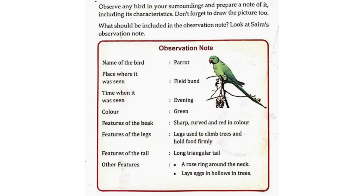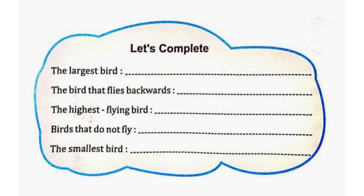An example is given below — look at Saira's observation note. Name of the bird: Parrot. Place where it was seen: Field bund. Time when it was seen: Evening. Colour: Green. Features of the beak: Sharp, curved and red in colour. Features of the legs: Used to climb trees and hold wood firmly. Features of the tail: Long triangular tail. Other features: A rose ring around the neck; lays eggs in hollows in trees.